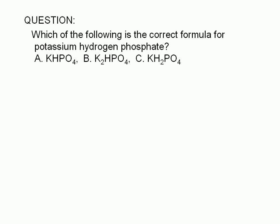Which of the following is the correct formula for potassium hydrogen phosphate? A. KHPO4, B. K2HPO4, or C. KH2PO4.